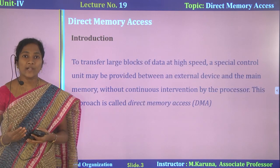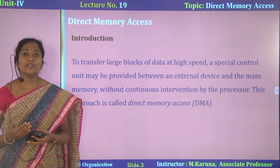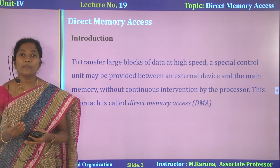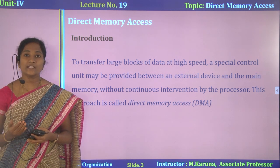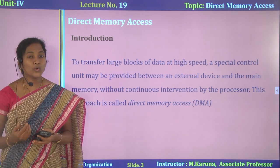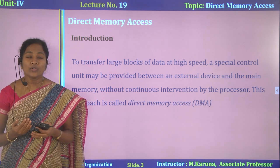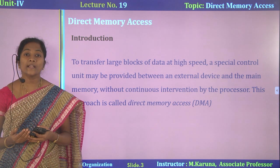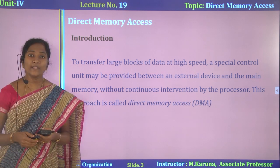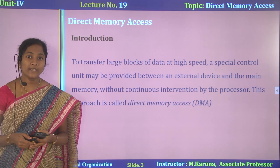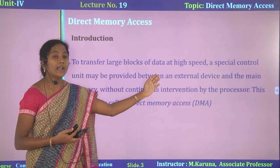Introduction. Last class we have seen Program Controlled IO Based Data Transfer, in which the processor always enters into waiting mode. That may affect the performance of the system — system performance may be reduced. So to make data transfer at a faster rate, we can go for Direct Memory Access. The circuit used to transfer data between external IO devices and memory without intervention of the CPU is called Direct Memory Access. DMA is used to transfer large blocks of data at high speed.